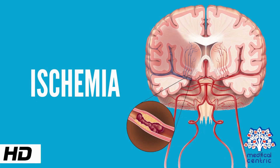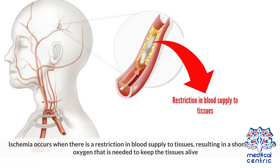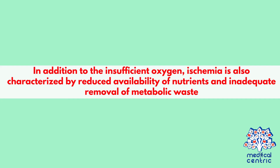Today's topic is ischemia. Ischemia occurs when there is a restriction in blood supply to tissues, resulting in a shortage of oxygen that is needed to keep the tissues alive. In addition to the insufficient oxygen, ischemia is also characterized by reduced availability of nutrients and inadequate removal of metabolic waste.